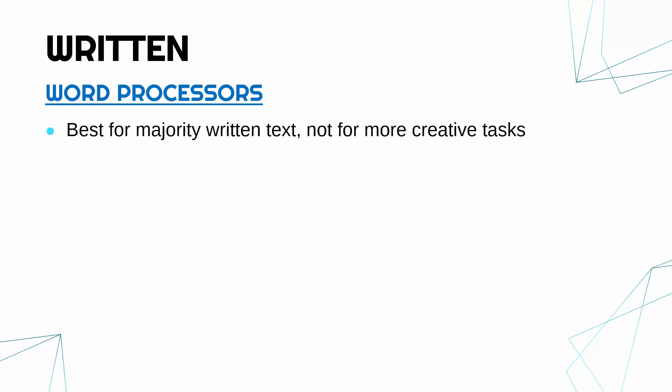Starting with word processors. A word processor is used for written text — for typing up words on a screen essentially. Word processors should be used when you are making something which is mostly written text.